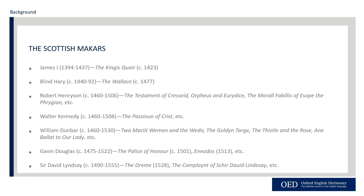Douglas is typically identified as a Scottish Makar — a group of Scottish poets from the 15th century who greatly developed the poetic capabilities of Scots and were influenced by vernacular poets like Dante, Petrarch, Chaucer, and Lydgate. Chaucer's influence is so pronounced that these poets have been referred to as Scottish Chaucerians in the past, although this term is now disfavored, as it suggests they were only imitators of Chaucer, which minimizes the importance of their own innovations and contributions.